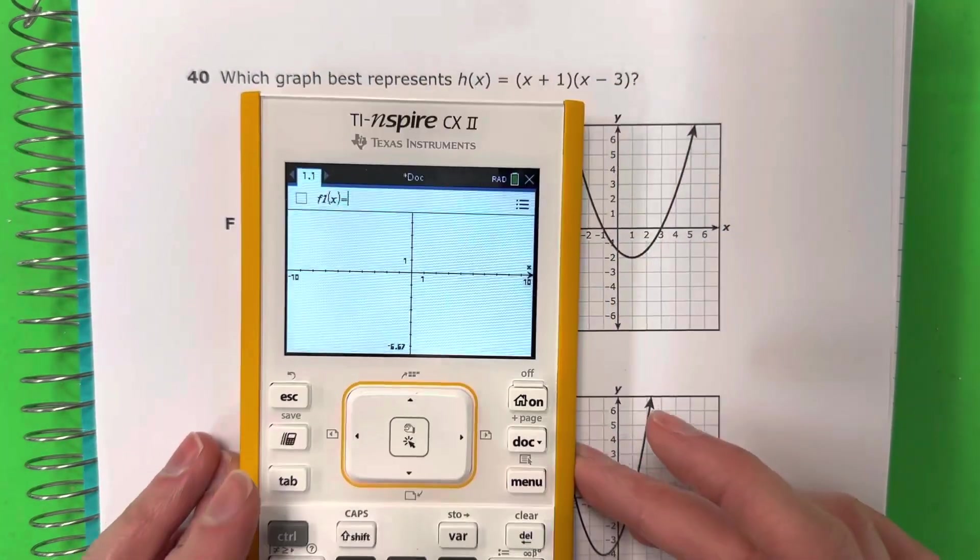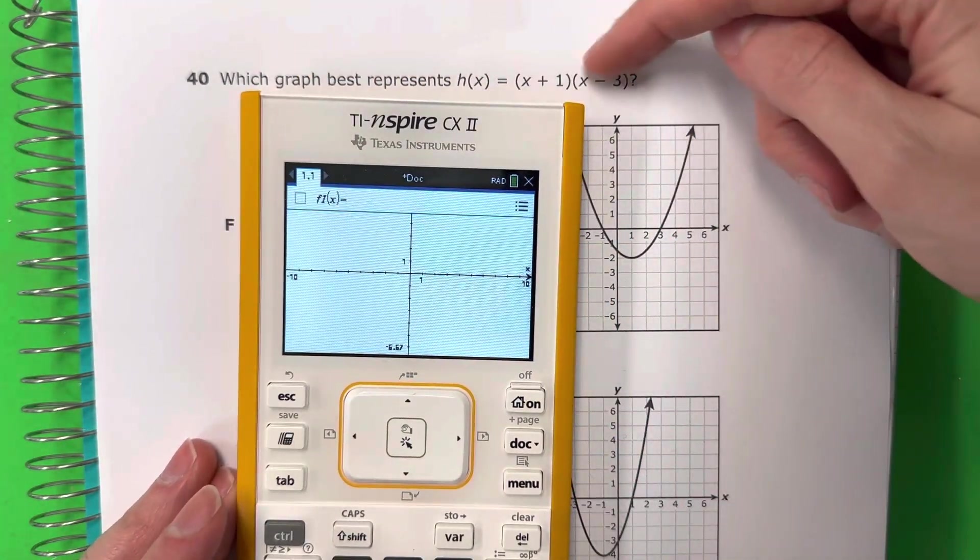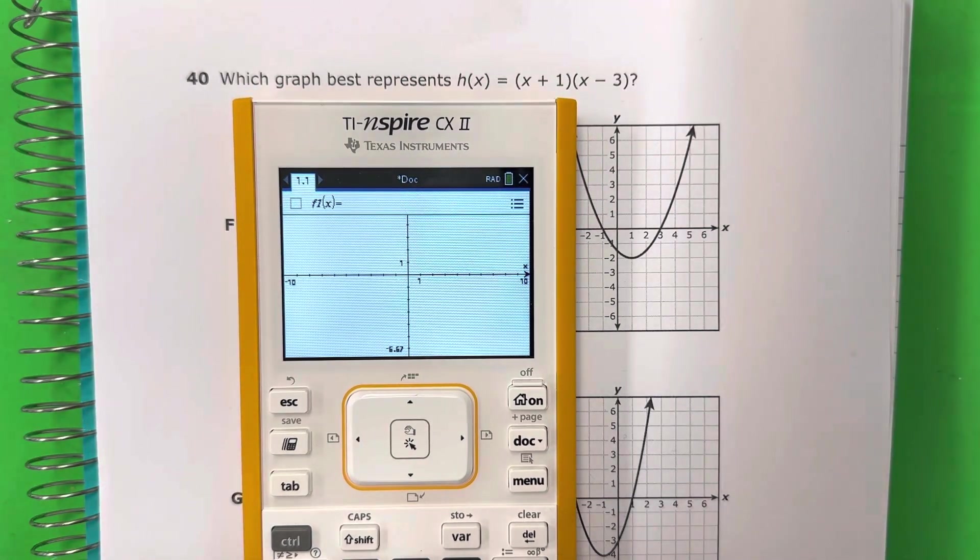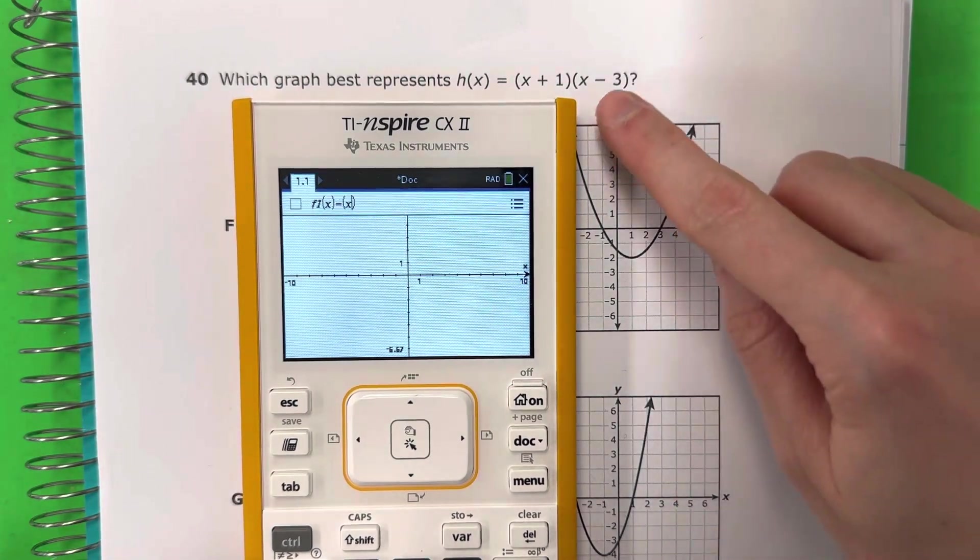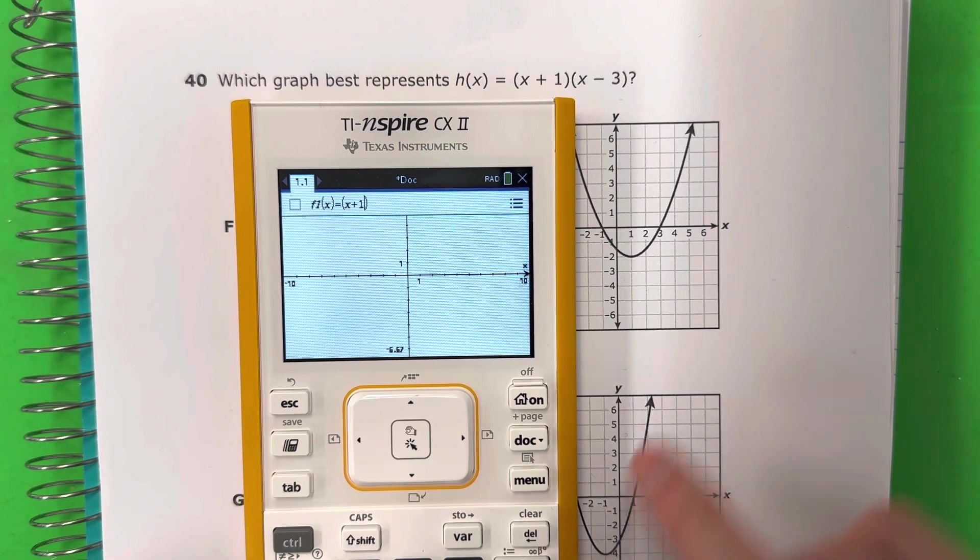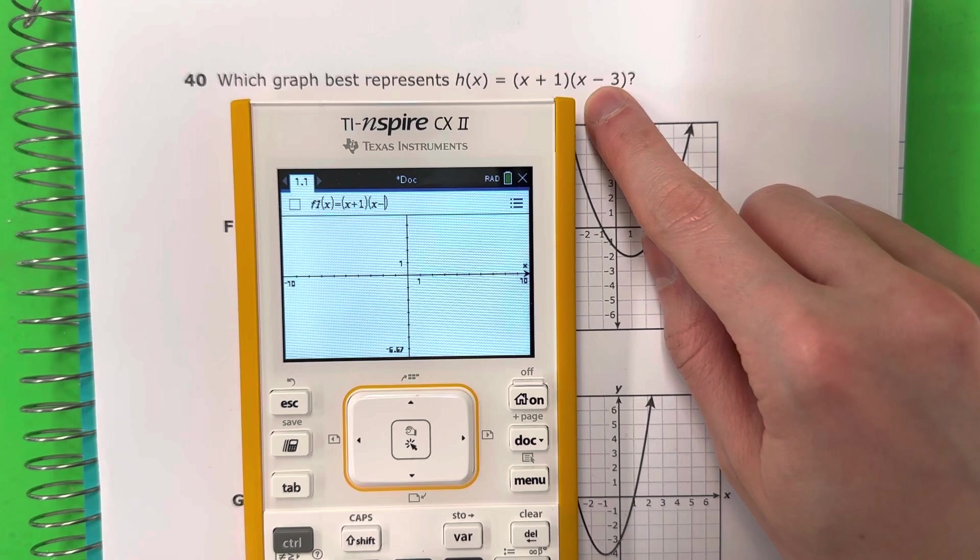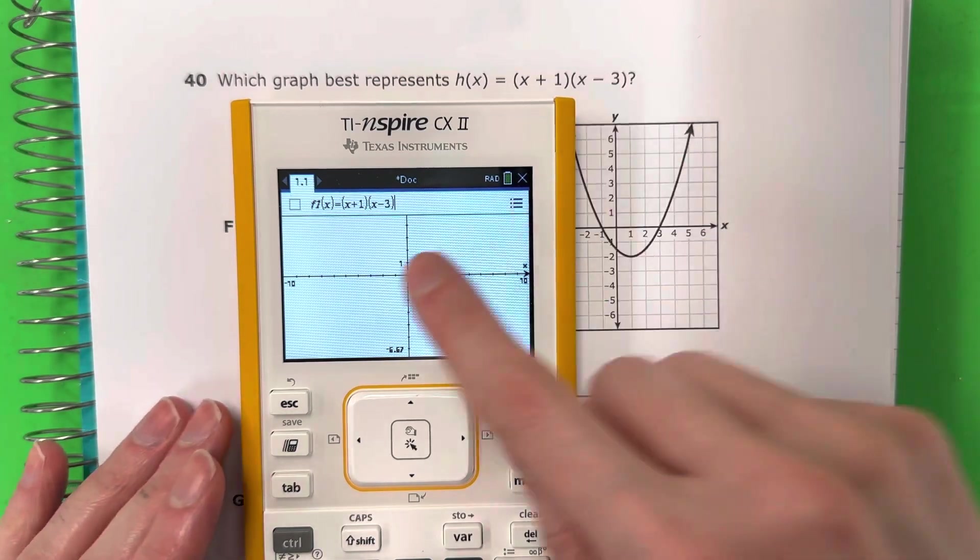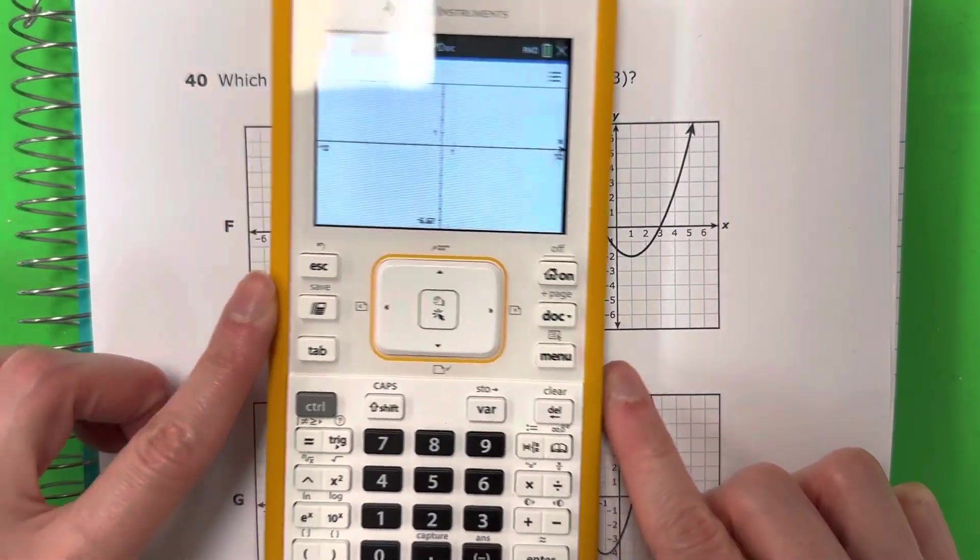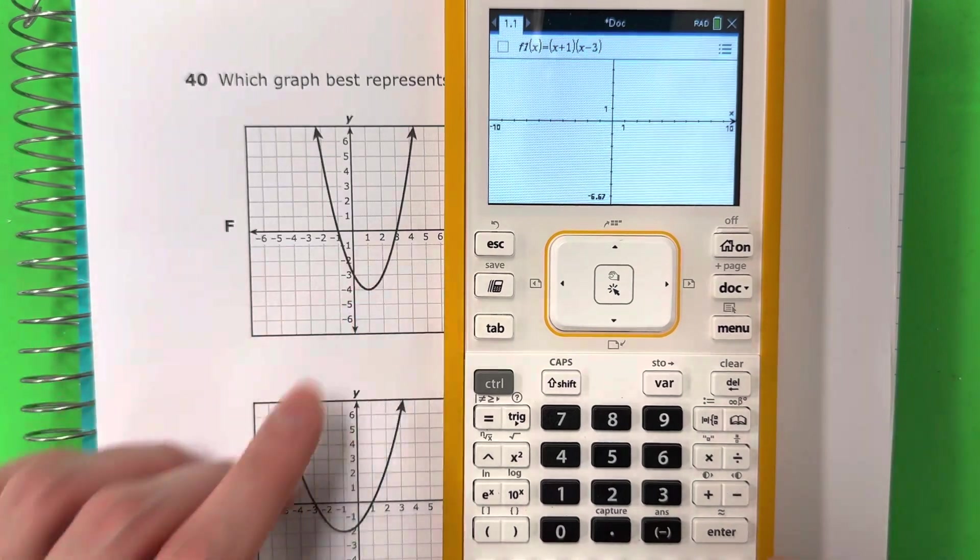Okay, we're going to go ahead and put this in the calculator right now. So go ahead and put parentheses x plus 1. Close parentheses. Cierra los parentheses. Open your parentheses. x minus 3. Close your parentheses. So you should have that there. Now go ahead and push enter.